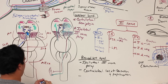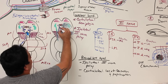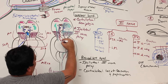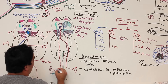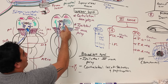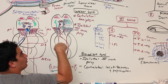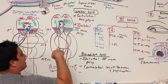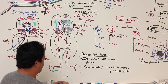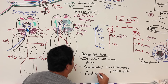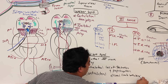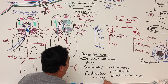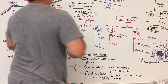Damage to the red nucleus in Benedict syndrome causes contralateral distal limb weakness (affecting wrist flexors) and flapping tremors due to disruption of the rubrospinal pathway. So Benedict syndrome presents with: ipsilateral third nerve palsy, contralateral loss of sensation and proprioception, and contralateral limb weakness or hemiplegia with flapping tremors.